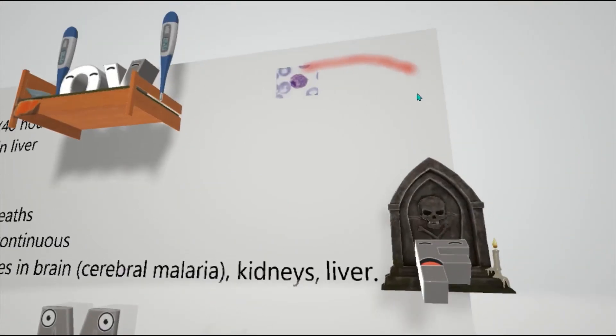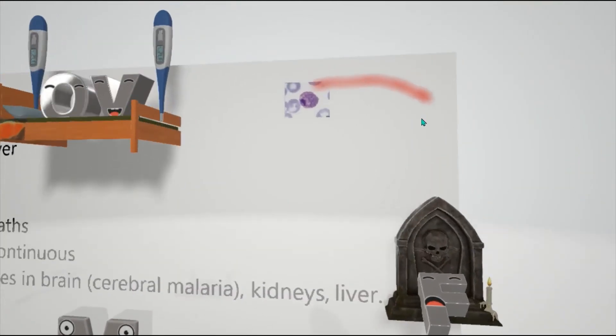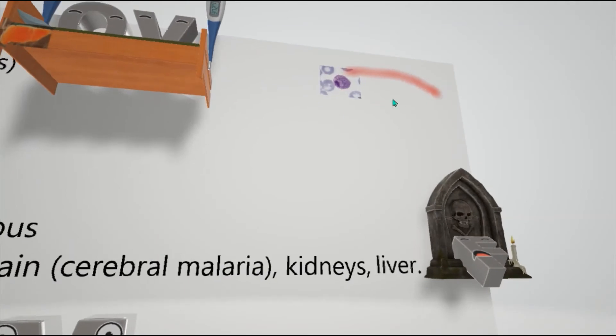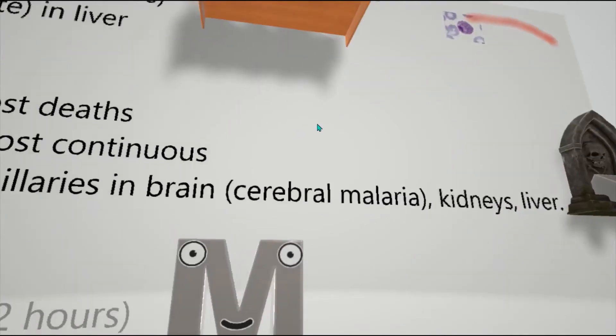That sticky protein causes all these problems, and the effects extend to the kidneys and liver. That's why we have the F here represented by the grave — to remind us that falciparum is the type that causes the most death.